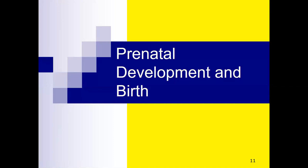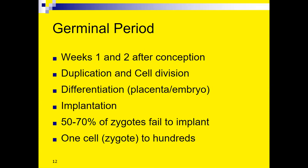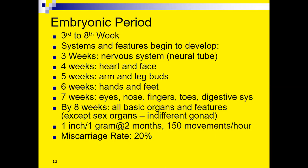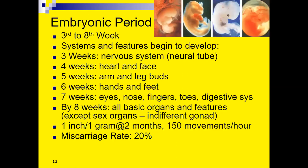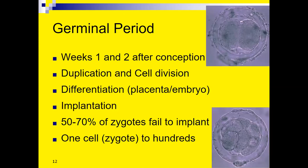Now let's move on to what developments occur during the prenatal period and the birth process. We're going to divide the prenatal period into three periods: the germinal period, the embryonic period, and the fetal period. These are not trimesters — trimesters are simply three-month groupings that don't really fit the pattern of how development actually occurs. This division is more consistent with specific developmental events.